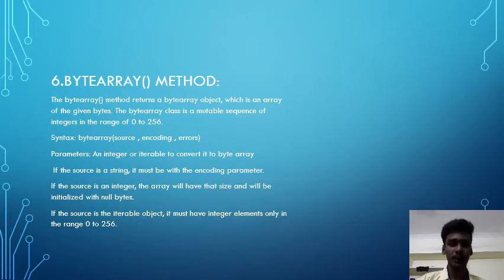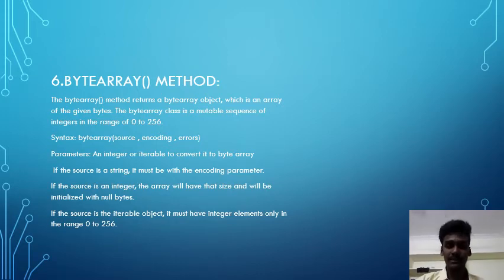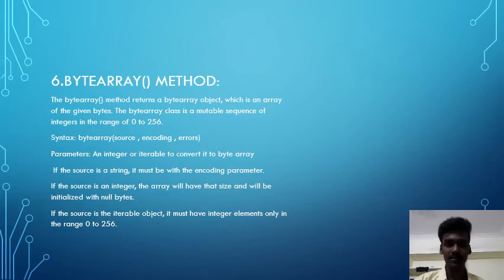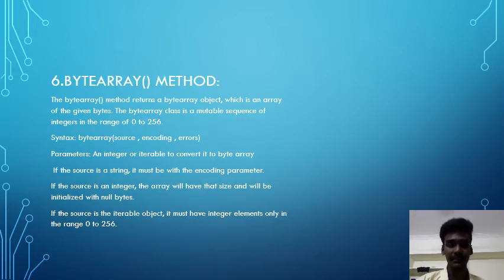The sixth one is bytearray() method. The bytearray() method returns a byte array object, which is an array of the given bytes. The bytearray class is a mutable sequence of integers in the range 0 to 256. The syntax is bytearray(source, encoding, errors). Parameters: if the source is a string, it must be used with the encoding parameter; if the source is an integer, the array will have that size and will be initialized with null bytes; if the source is an iterable object, it must have integer elements only in the range 0 to 256.